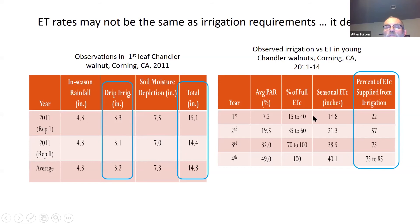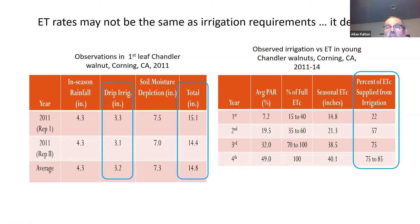We carried those studies out for four more years. What we did see was that the dependency on irrigation increased as the orchard got older. In the first leaf, we only had to supply 22% of the ET from irrigation. In the second year, 57% from irrigation. In the third year, 75% from irrigation. And by the fourth year, when these trees were 20 to 25 feet tall and intercepting about 50% of the canopy light, and when there was significant ground cover in the orchard middles in the month of May, we found that 75% to 85% of the crop ET for the season — which totaled 40 inches — needed to be supplied from irrigation.